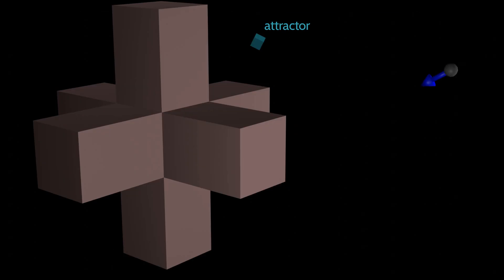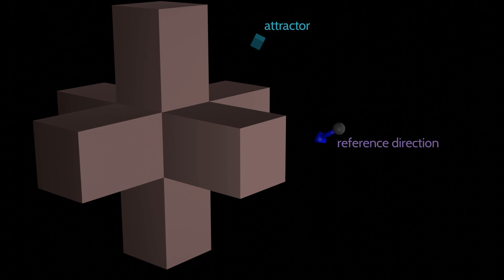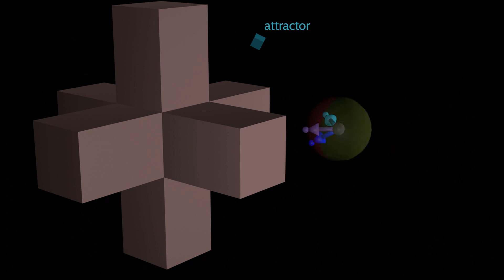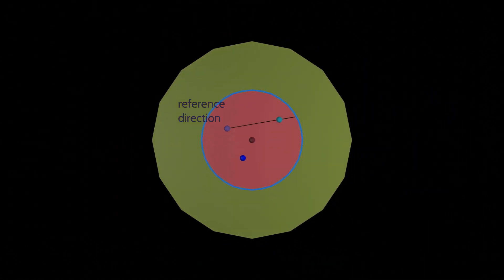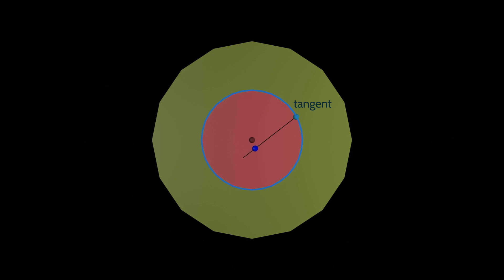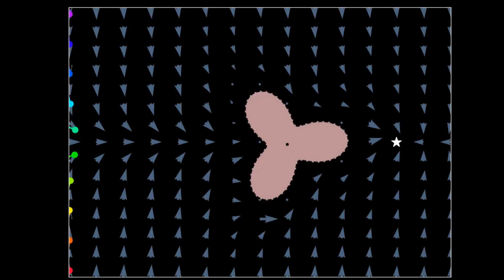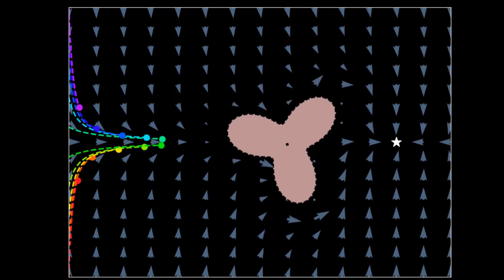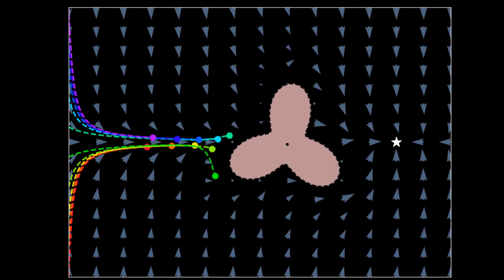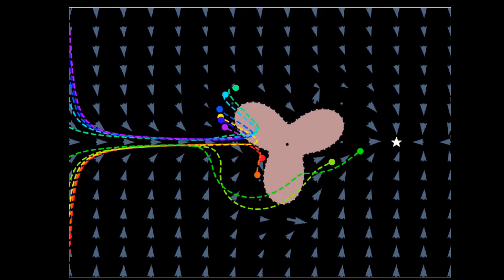For more complex environments, we introduce two additional vectors: the reference direction pointing towards the center of the obstacle, and the convergence direction towards the attractor. After applying the stereographic projection, we first obtain the optimal tangent direction. The velocity is then rotated towards the tangent. This rotation ensures convergence around complex obstacles and accounts for nonlinear dynamics.